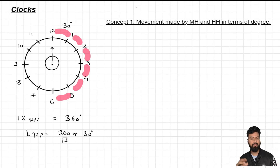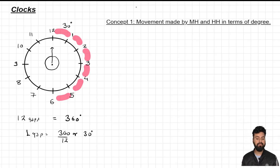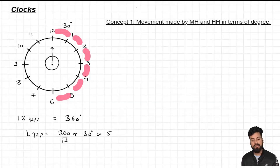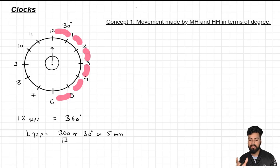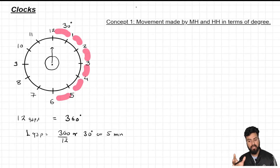The value of that same one gap in terms of minutes is 5. The same 30 degrees can be represented in terms of minutes as 5. After understanding this basic concept, it's time to start with the main concept — movement made by the minute hand and hour hand in terms of degree.